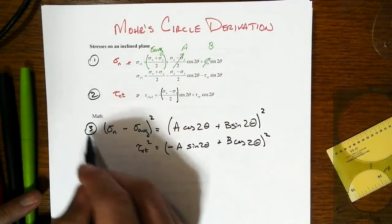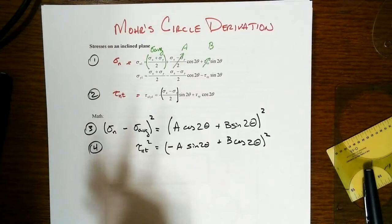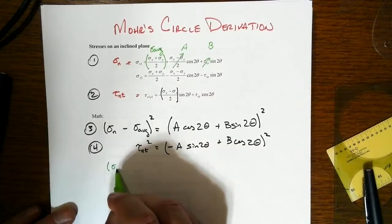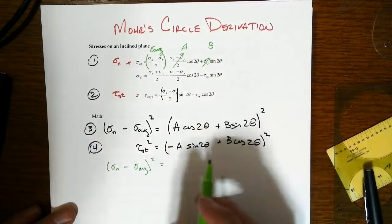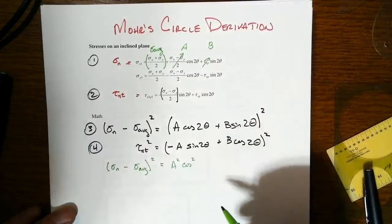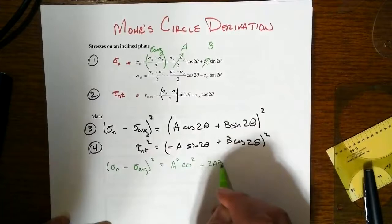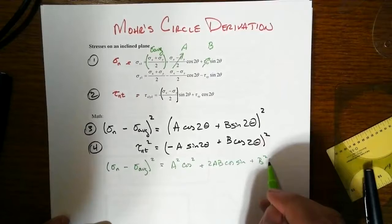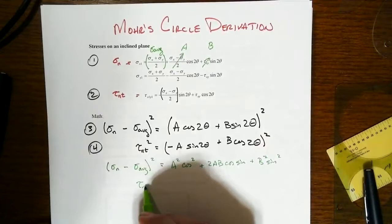So let's call the first one equation three, the second one equation four. When we do that and add these together, now we'll take them one step at a time. So we got the first part, sigma n minus sigma average quantity squared. Then the expansion of this one will be A squared times cosine squared. I'm not going to write the two theta anymore because it's the same argument for all of these, plus two AB cosine times sine plus B squared times sine squared.